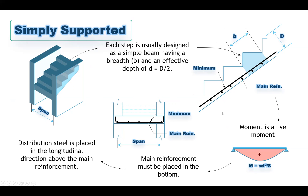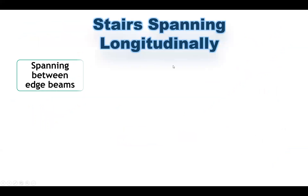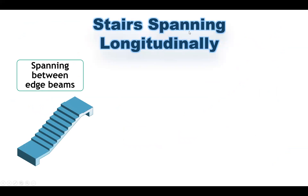Those are the two main types of stairs supported in the transverse direction: cantilever and simply supported. Let's now go to the second major category — stairs spanning in the longitudinal direction. We can classify these into three types. The first is spanning between edge beams, where you have a beam at each end of the landing, and the span goes from the center line of one beam to the center line of the other beam.